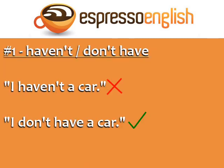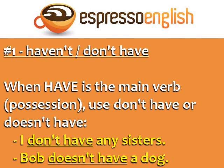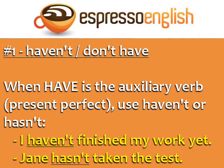Number one: the difference between haven't and don't have. 'I haven't a car' is incorrect. The correct sentence is 'I don't have a car.' When have is the main verb, meaning possession, we use 'don't have' and 'doesn't have.' For example: 'I don't have any sisters.' 'Bob doesn't have a dog.' When have is the auxiliary verb, like in the present perfect, then we use 'haven't' and 'hasn't.' For example: 'I haven't finished my work yet.' 'Jane hasn't taken the test.'